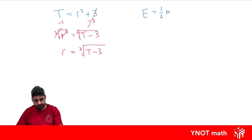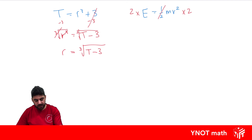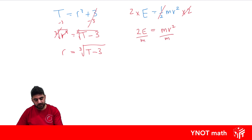e equals a half mv squared. Let's go ahead and make v the subject. The best first step is to multiply both sides by 2 to get rid of the half — the half and the 2 make 1 — so we've got 2e equals mv squared. We're trying to make v the subject, so let's divide both sides by m, because it's m times v squared. The opposite of multiplying by m is dividing by m, so we're left with v squared equals 2e over m.